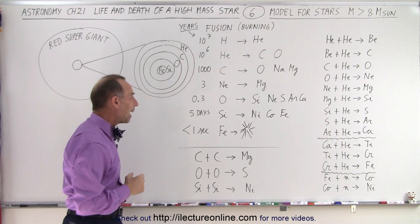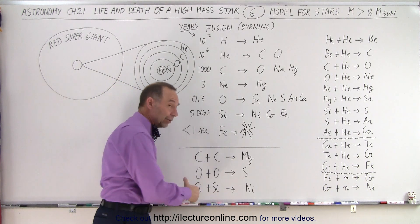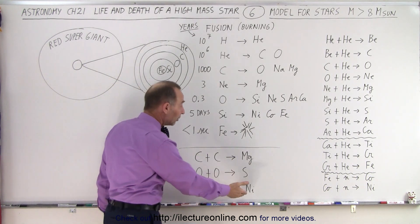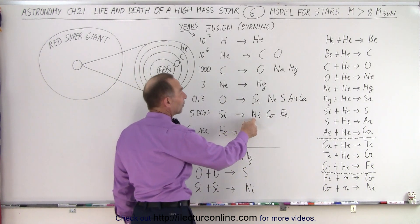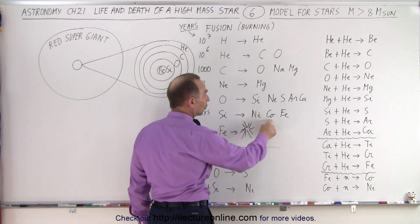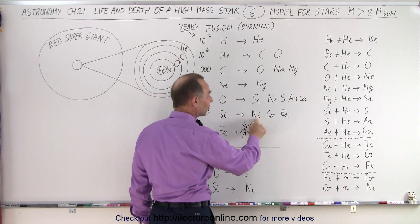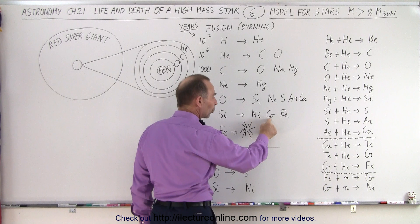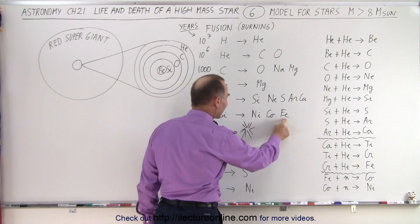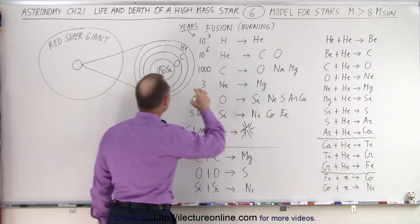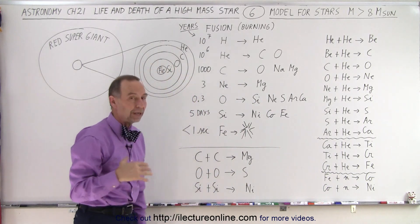What probably happens is when the two silicons combine under very high temperatures into nickel, now what happens is the nickel will then decompose into cobalt because the nickel will be unstable. It will go into cobalt, will also be unstable, and eventually into stable iron. And so that's how eventually the inner core begins to fill with iron.